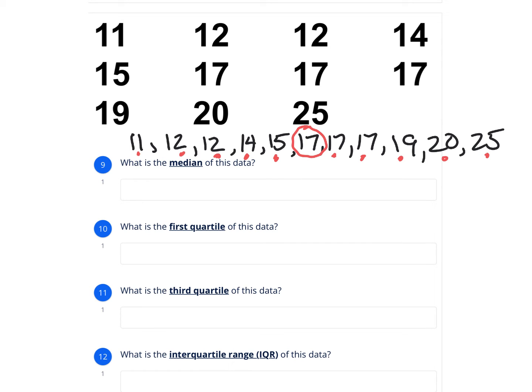17 is my median. If there's two numbers in the middle, you're going to put a line in between them and split the two numbers in half. So that's called your median. So median is 17.